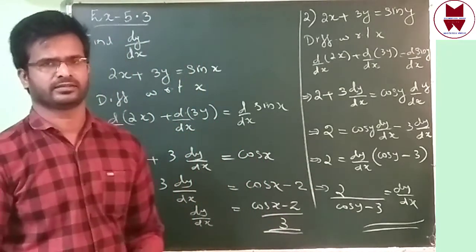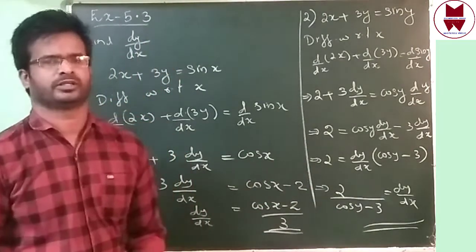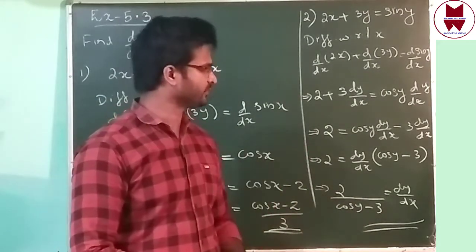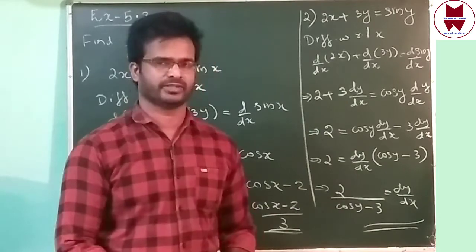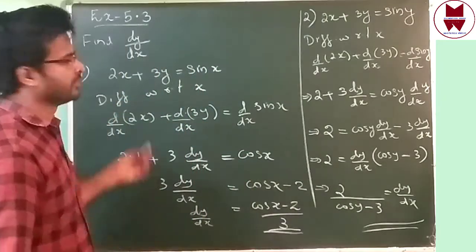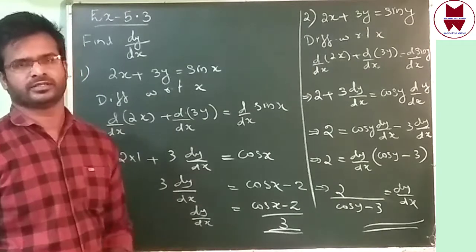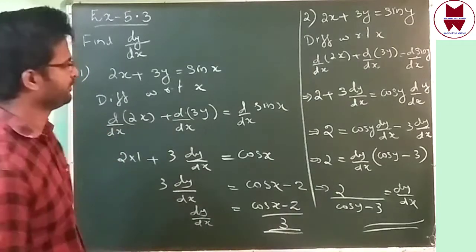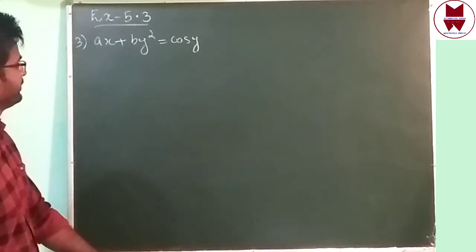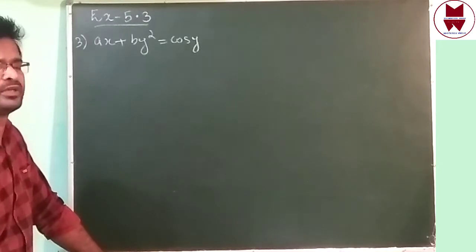Very easy — nothing difficult. Just use all the derivatives and you can find the answer easily. Now we can see question number 3. Just pause the video and write it down in your notebook. Question number 3 is: ax + by² = cos y.